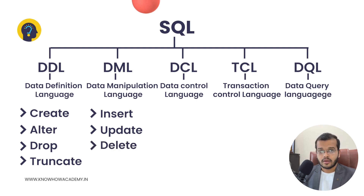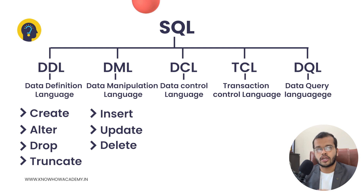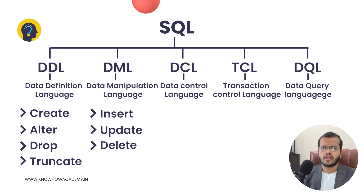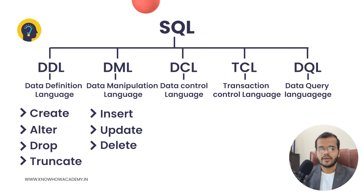Next is Delete. You might ask: earlier you mentioned Drop, now you are saying Delete — what's the difference? Drop is used to remove something permanently, and it does not allow you to remove individual records. But Delete allows you to remove individual records — for example, out of 10 rows, if you want to remove row number 5, you can do that using Delete but not Drop. Also, Delete is temporary — if you want to get the data back, you can recover it.